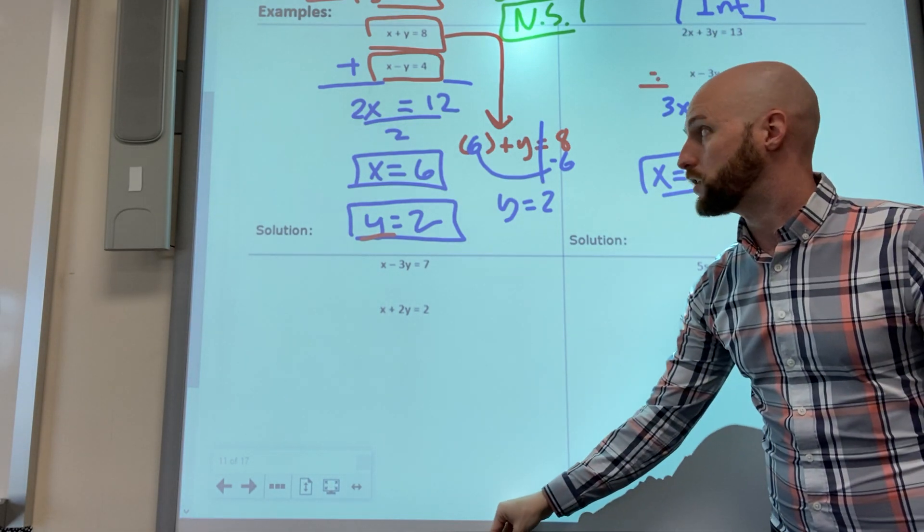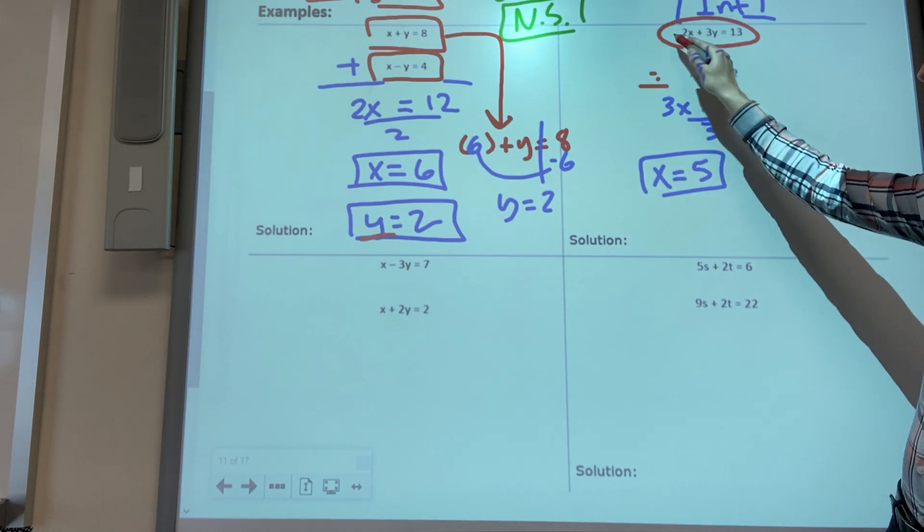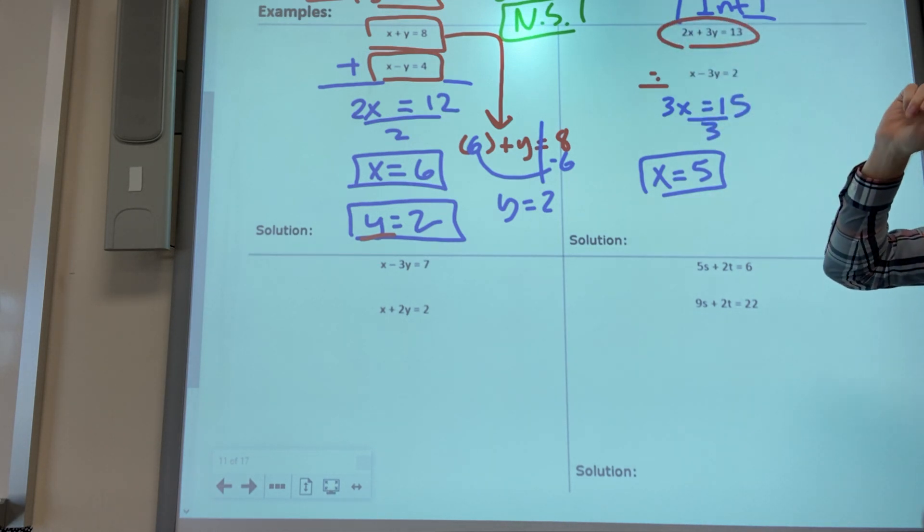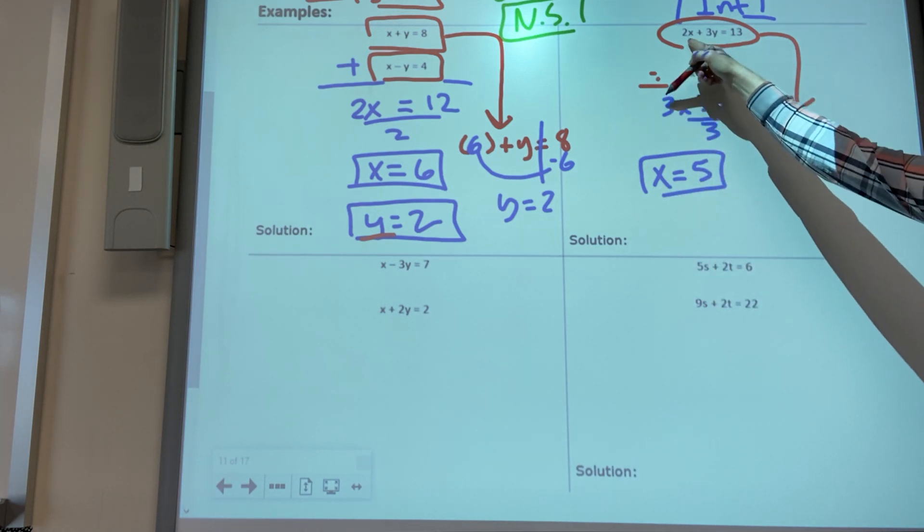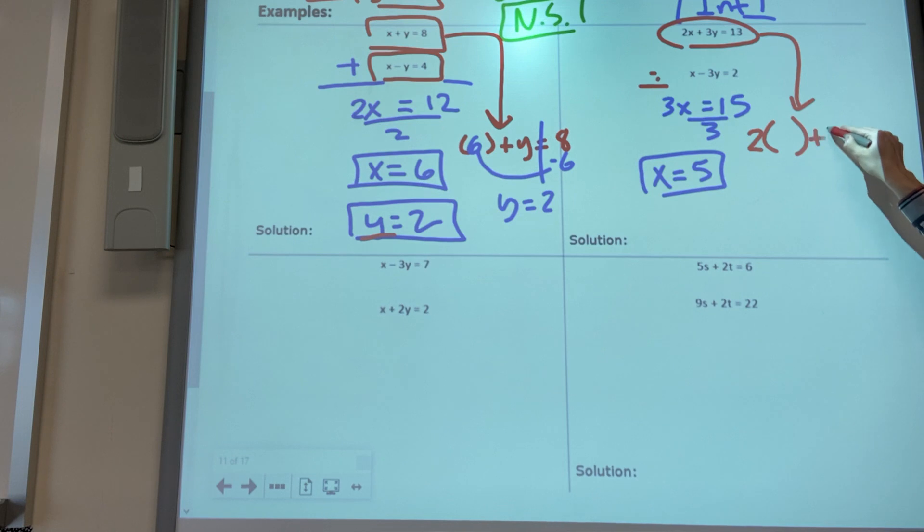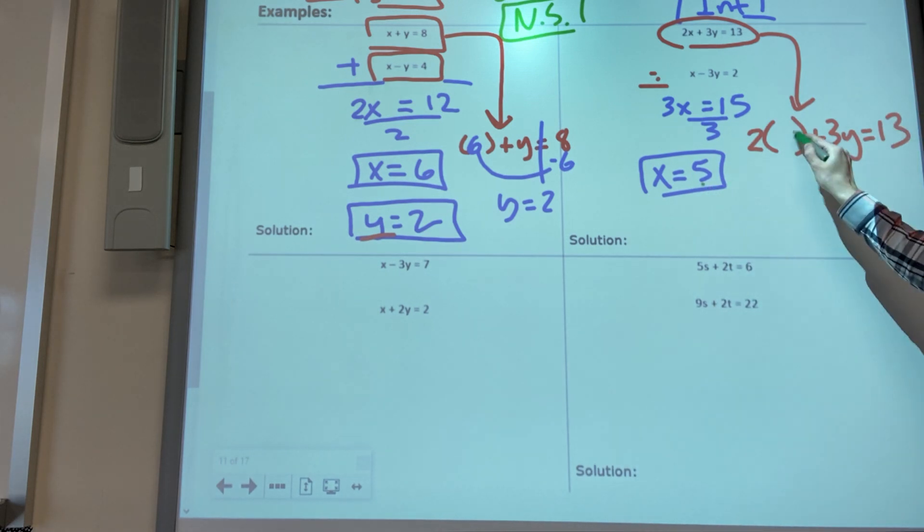Now I pick an equation. Ahora voy a escoger cualquiera de los dos ecuaciones. I like this one because there's no negatives. So I know that x is five, so two x plus three y equals 13. This is ten plus three y equals thirteen. Minus ten, three y equals three, divide and y equals one.